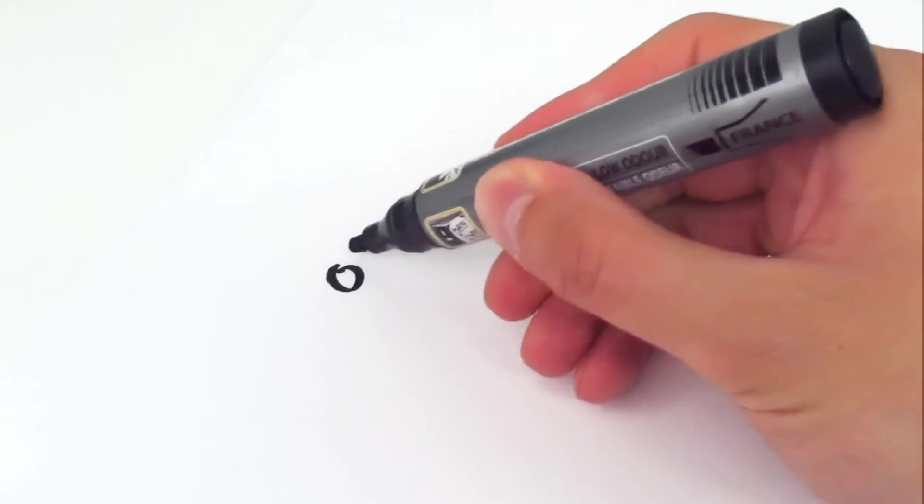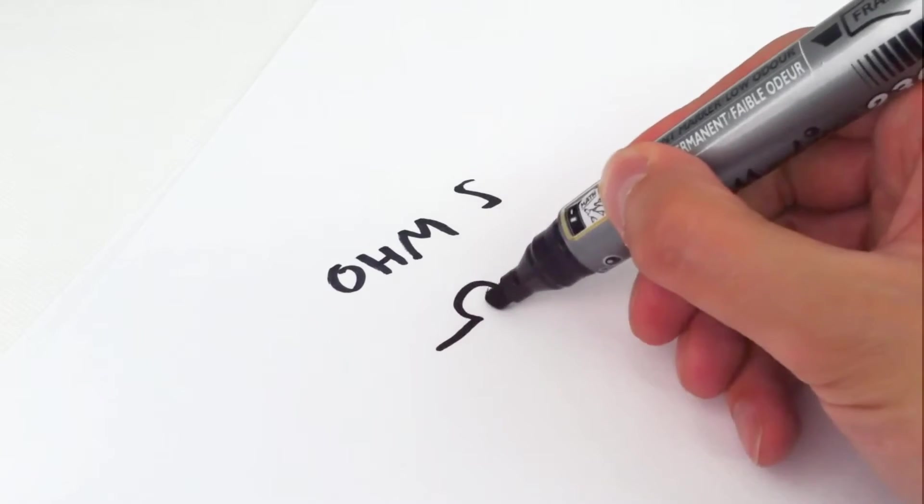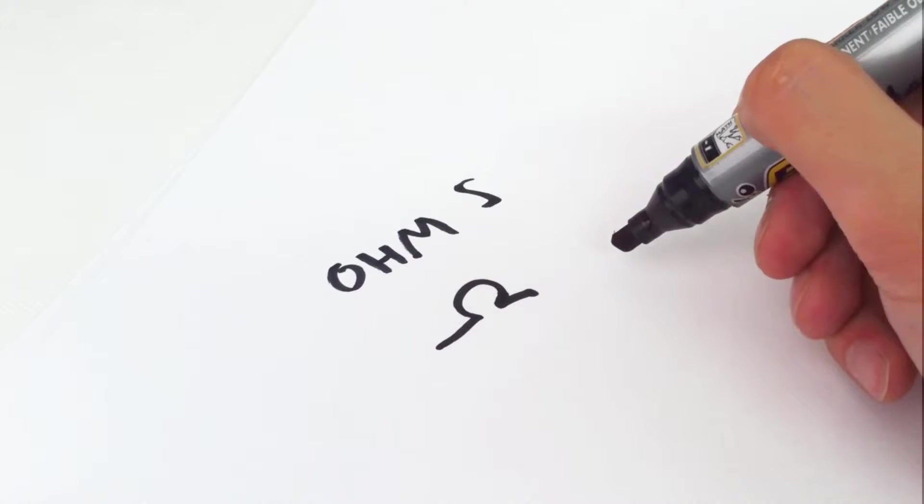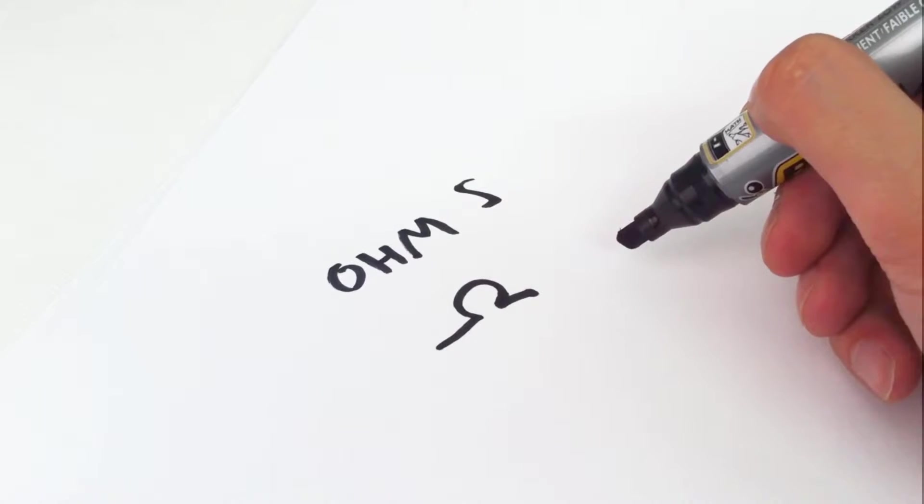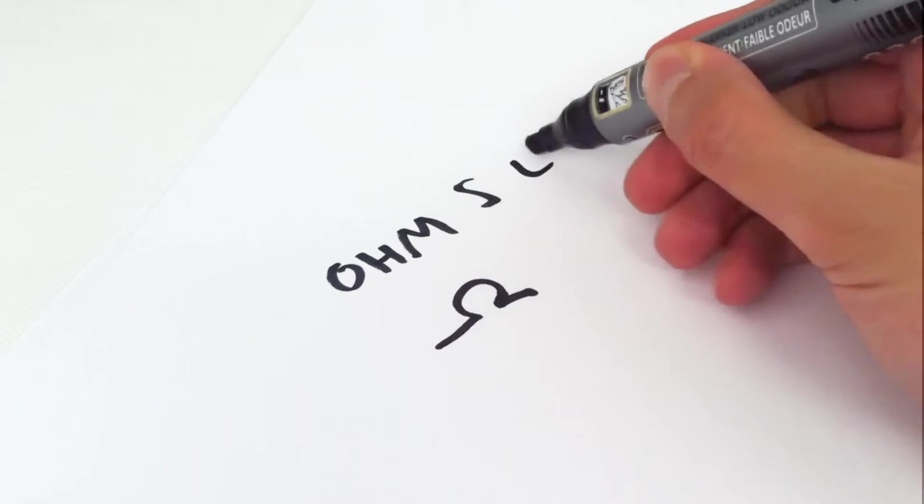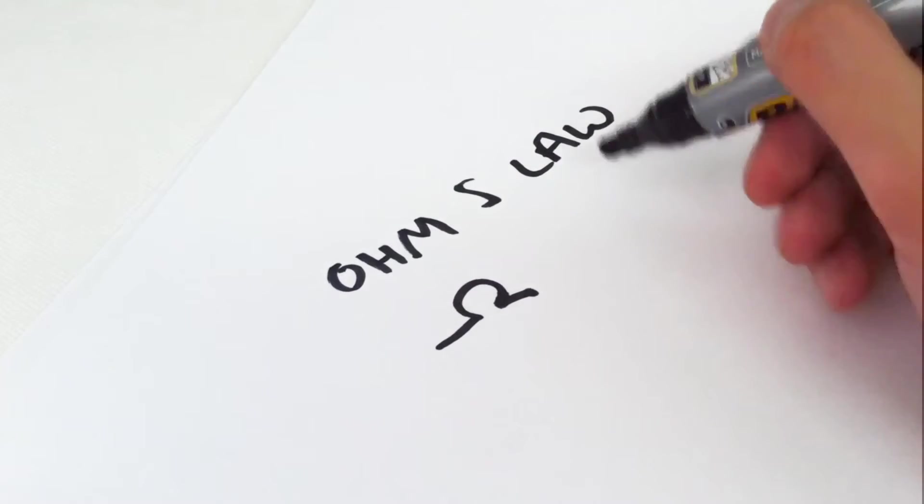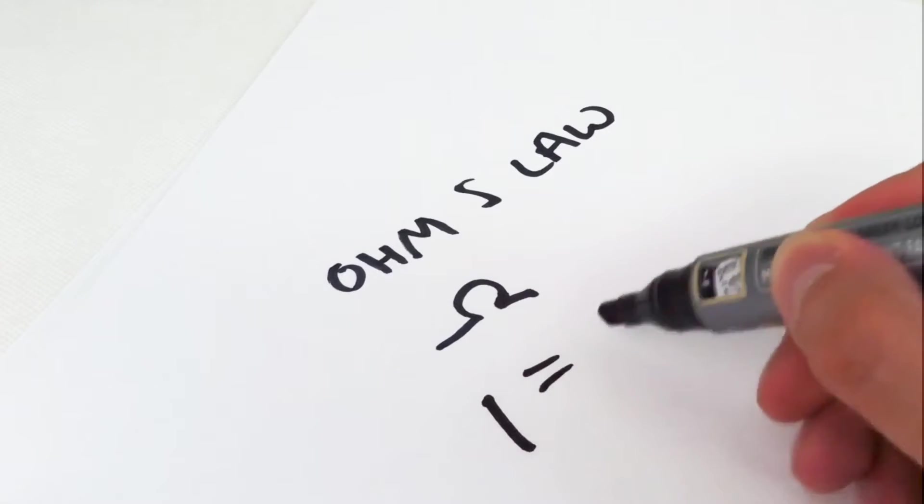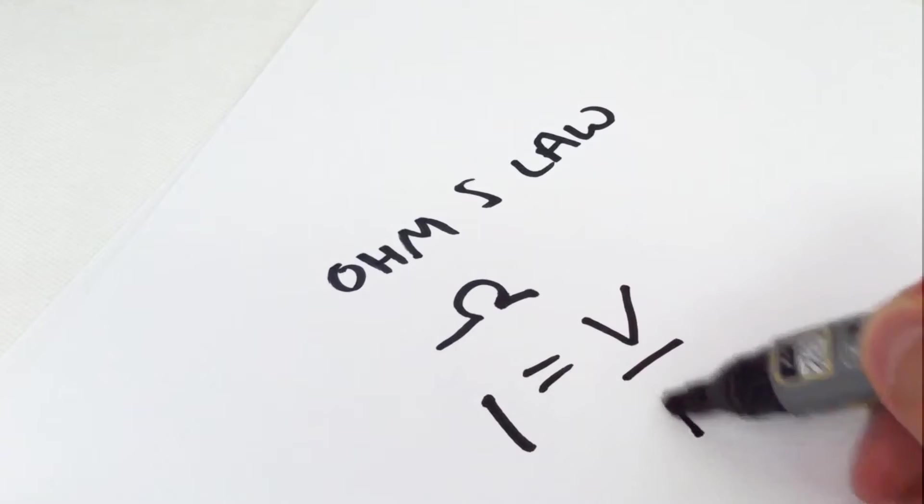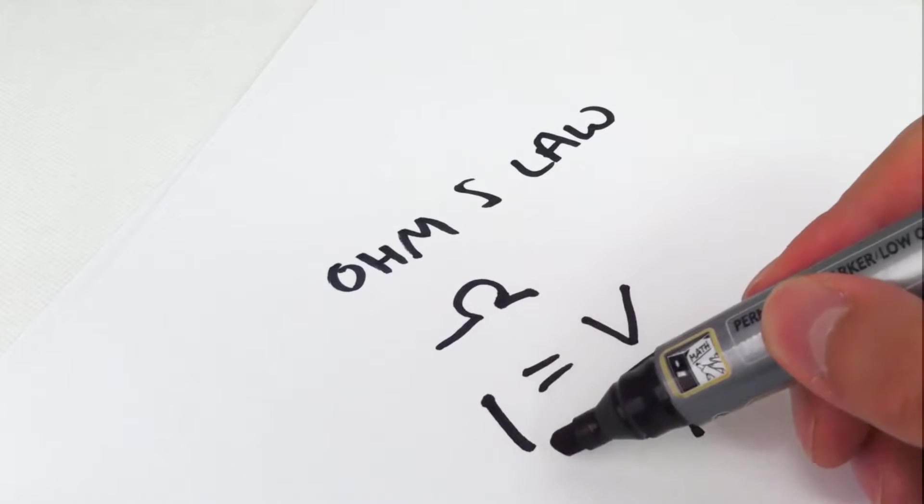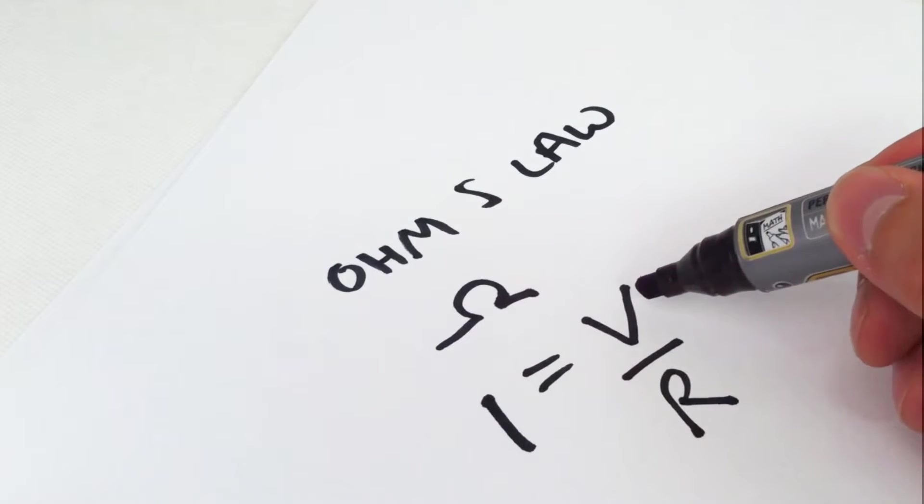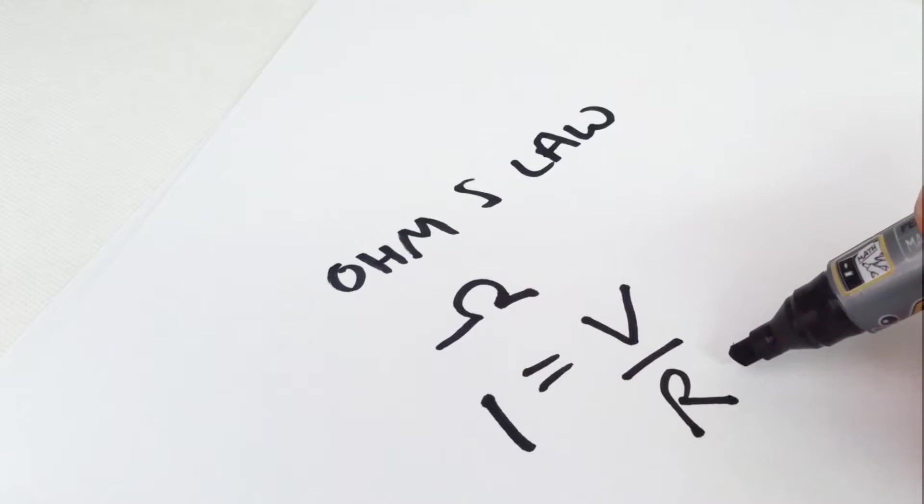Resistance is measured in Ohms, represented by the Greek symbol Omega. We calculate resistance using the formula known as Ohm's law, which is I equals V over R, or current I equals volts divided by resistance in Ohms.